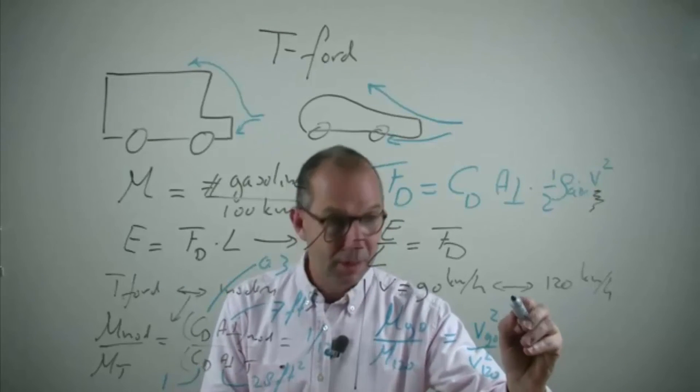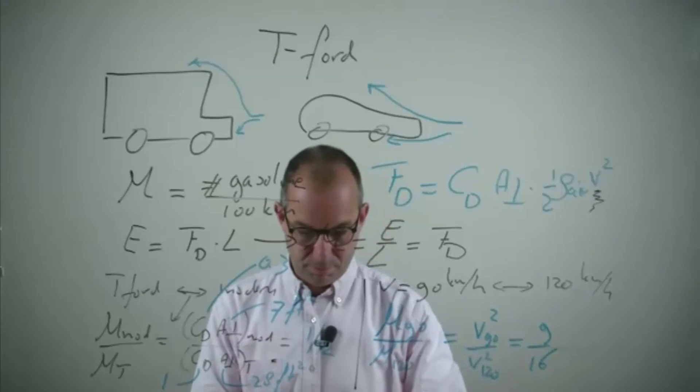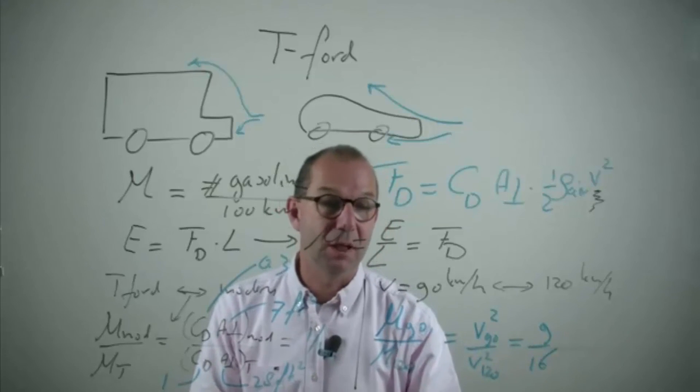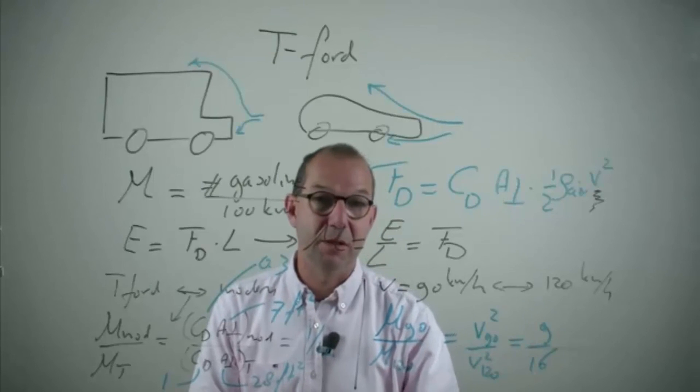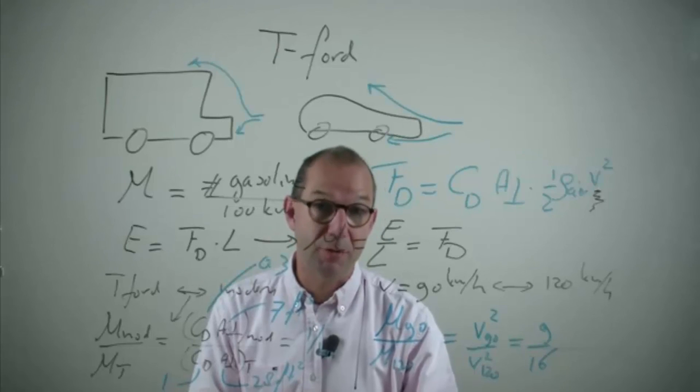Out of that comes that the mileage goes down pretty quickly. If you increase your speed from 90 to 120 km per hour you roughly double the amount of energy that you use. From an environmental point of view you better drive slow.